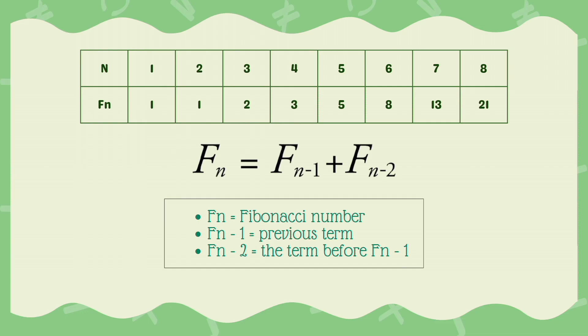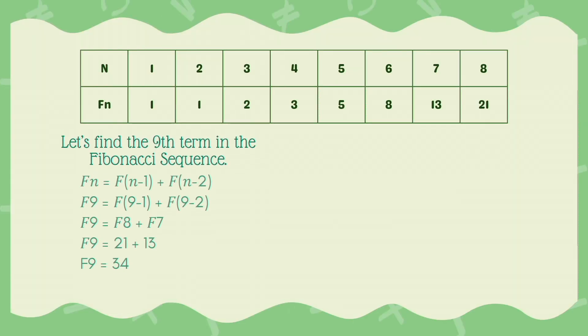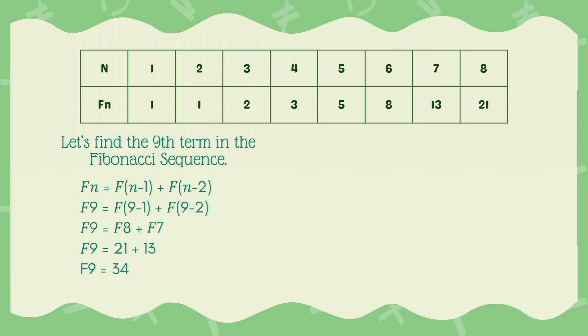For example, let's find the 9th term in the Fibonacci sequence. To find it, we're just going to add the 2 previous terms, which is 7 and 8, which has the value of 13 and 21. Then we're just going to add them, then we'll get 34.